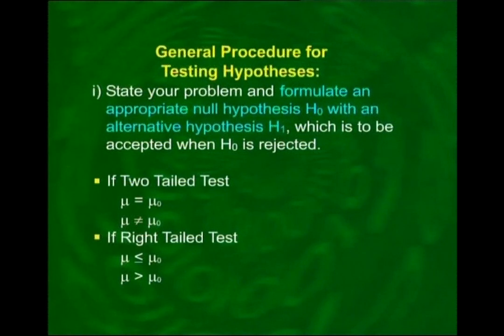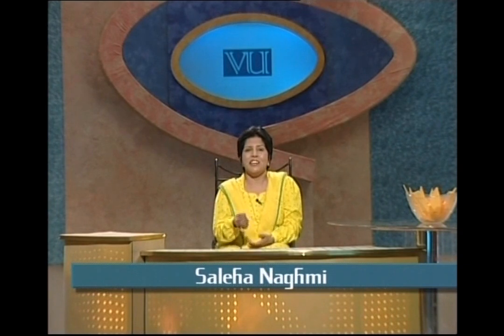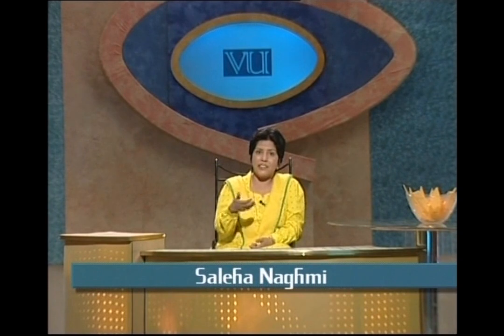It may be a two-tailed test or a one-tailed test. In the case of mu, if it is a two-tailed test, our null hypothesis would be: mu equals mu-naught, and the alternative would be: mu is not equal to mu-naught. But if it is a right-tailed test, the null hypothesis says mu is less than or equal to mu-naught, whereas the alternative hypothesis would say mu is greater than mu-naught. Mu-naught simply means the numerical value assigned to mu under the null hypothesis.